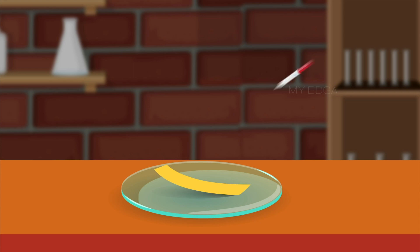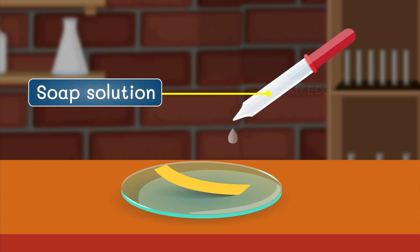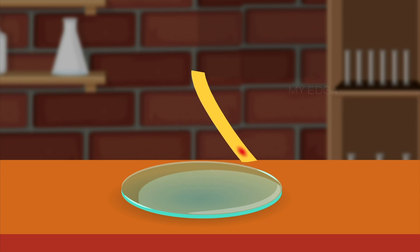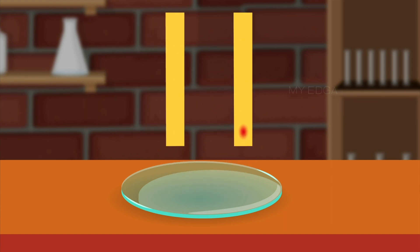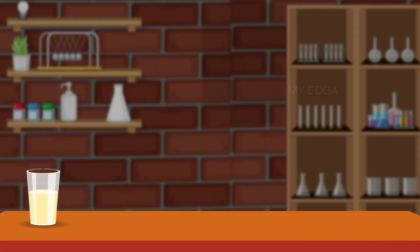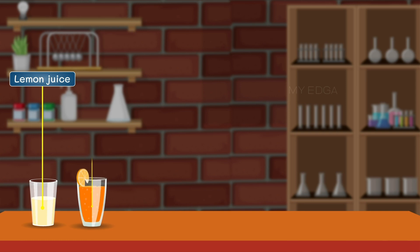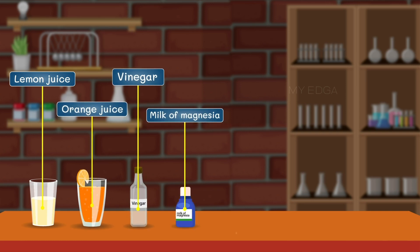Now put a drop of soap solution on the strip of turmeric paper. We can see that the paper's color changed from yellow to red. Now we will use the solutions of lemon juice, orange juice, vinegar, milk of magnesia, baking soda, lime water, sugar and common salt to check how turmeric works as an indicator.